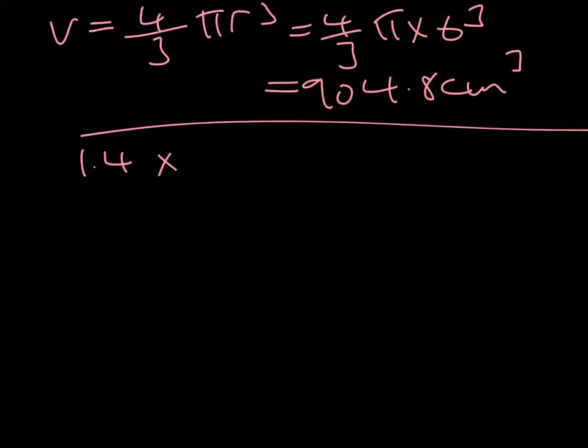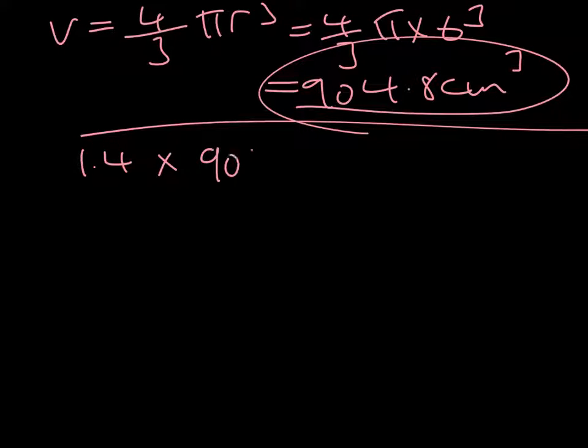So if we do 1.4 times our answer in part A, 1.4 times 904.8, that's going to give us a new volume of 1,266.69.